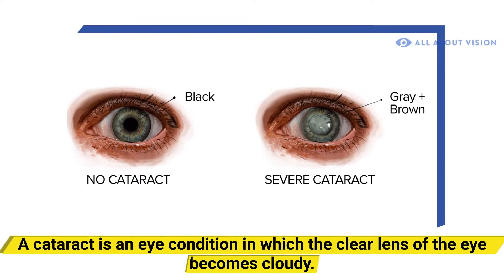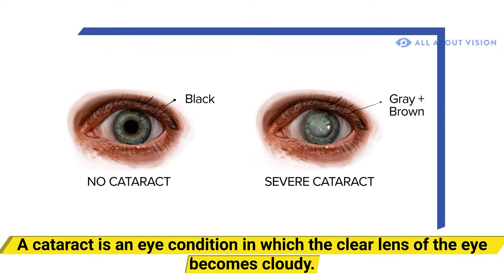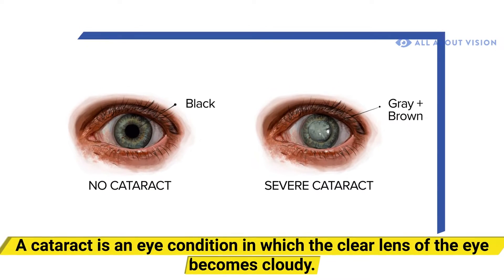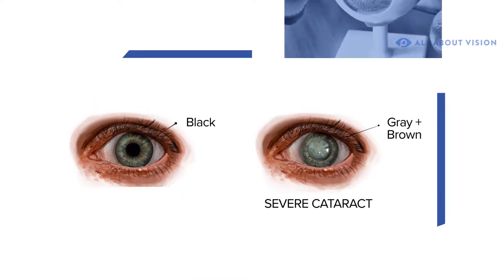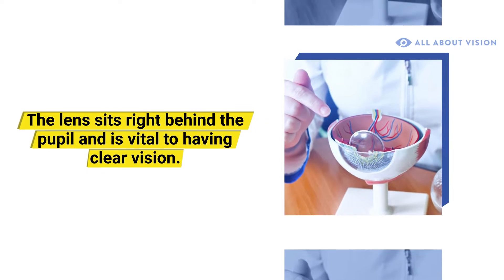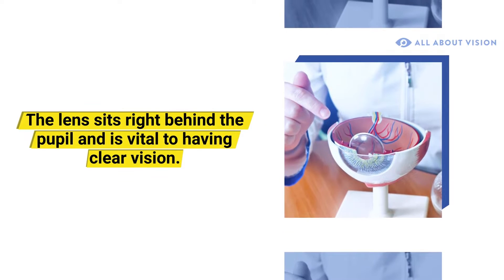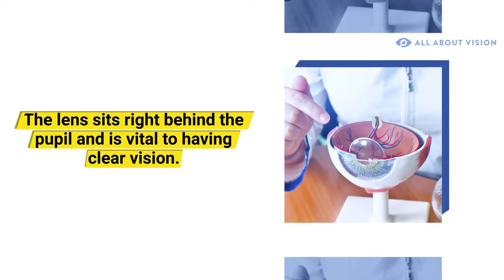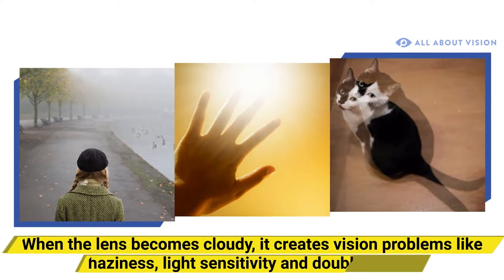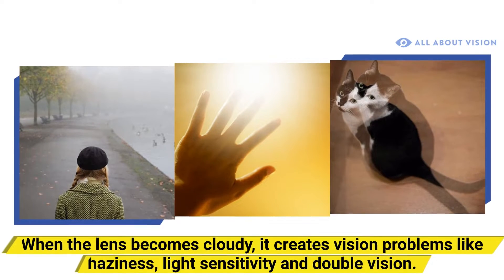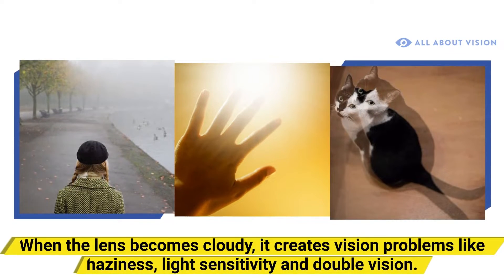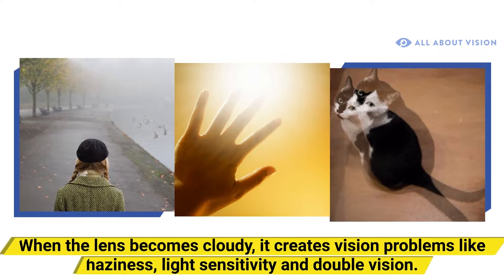A cataract is an eye condition in which the clear lens of the eye becomes cloudy. The lens sits right behind the pupil and is vital to having clear vision. When the lens becomes cloudy, it creates vision problems like haziness, light sensitivity, and double vision.